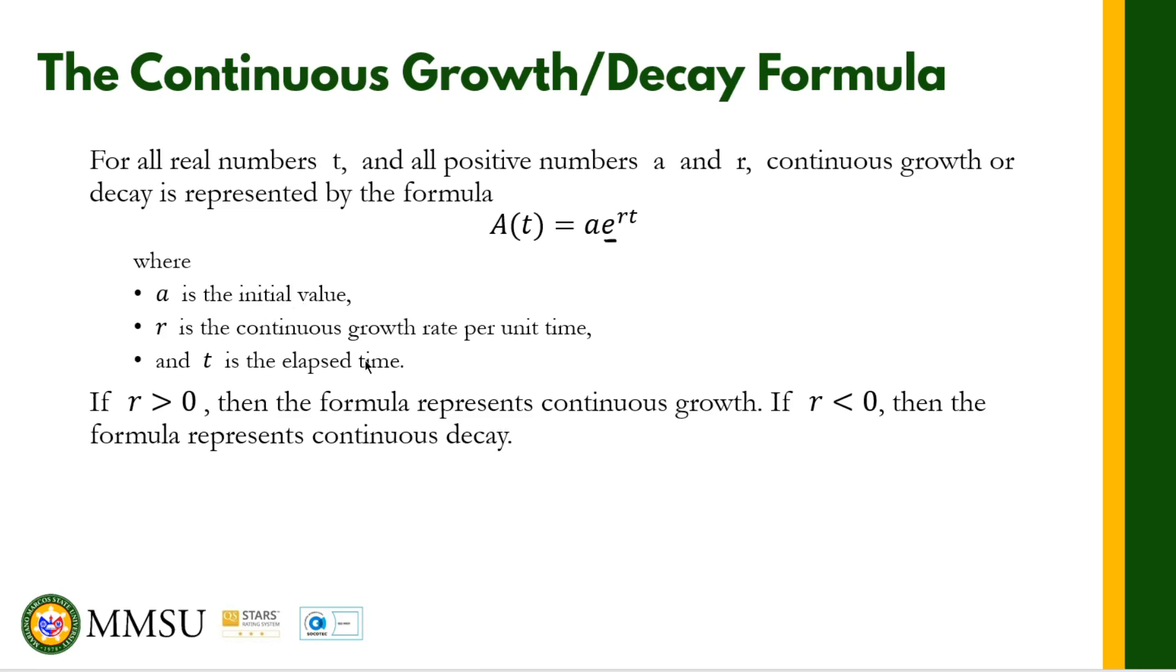Still the same, A is the initial value, r is the continuous growth rate per unit time, and t is the elapsed time. If r is greater than zero, that means r is positive, then we have continuous growth. Otherwise, if r is negative, we have continuous decay.